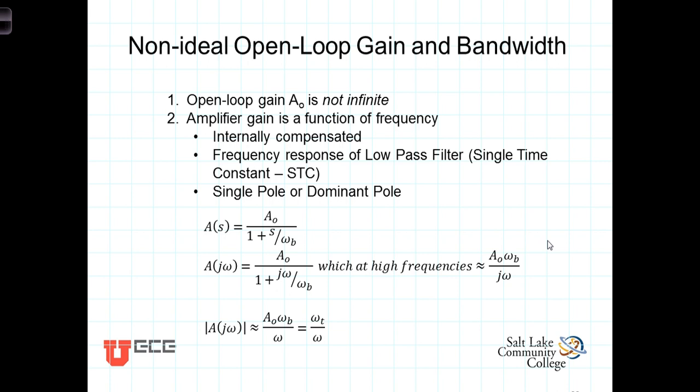In this video, we discuss a couple more ways that real-world op-amps deviate from our ideal model. First of all, and we've talked about this from the very beginning, the open-loop gain A0 is not infinite. It's very large and can be on the order of 50,000 to 100,000, maybe even as high as 200,000.